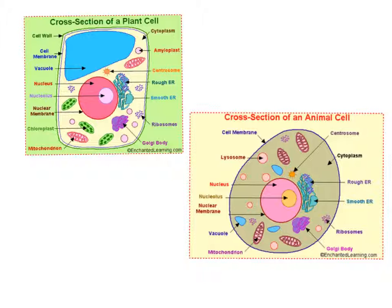The next definition is structure. Structure is actually going to be anything composed of parts arranged together for organization, specifically within plant and animal cells.